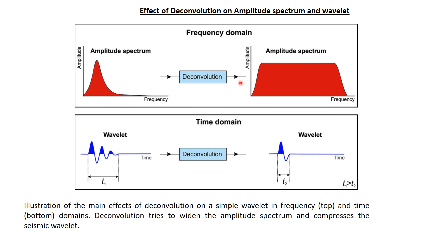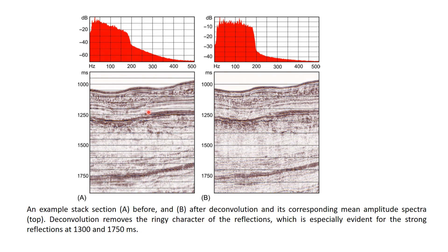Pictorially, the deconvolution operation broadens the amplitude spectrum and simultaneously shortens the pulse length. In a typical example showing before and after deconvolution, the time series data shows that deconvolution removes the ringy character of reflections in the stack section. This ringing is generally evident for strong reflections before deconvolution, but is largely removed after applying the operation.